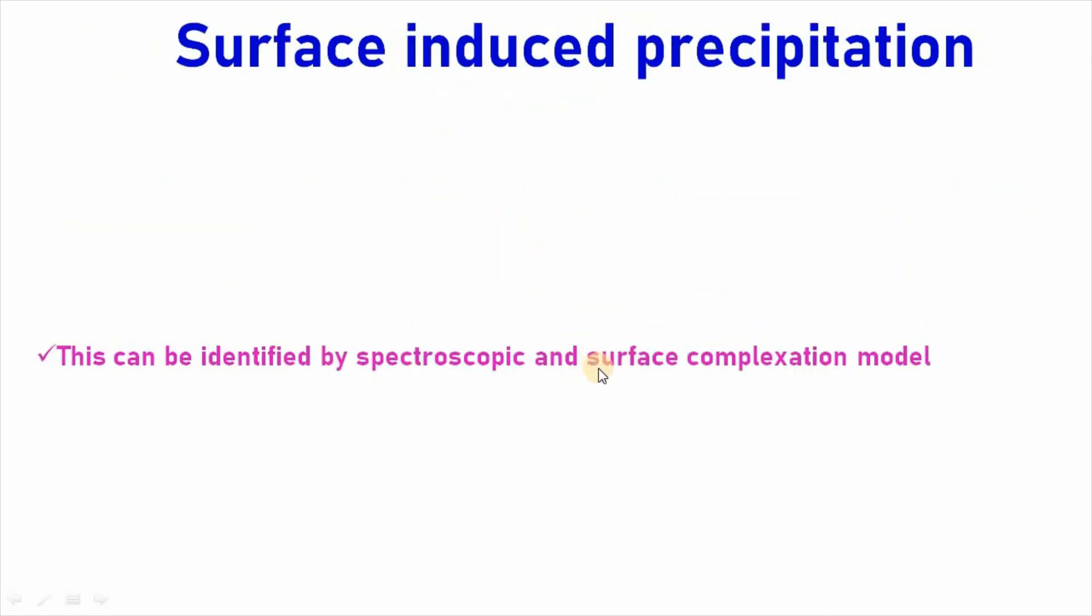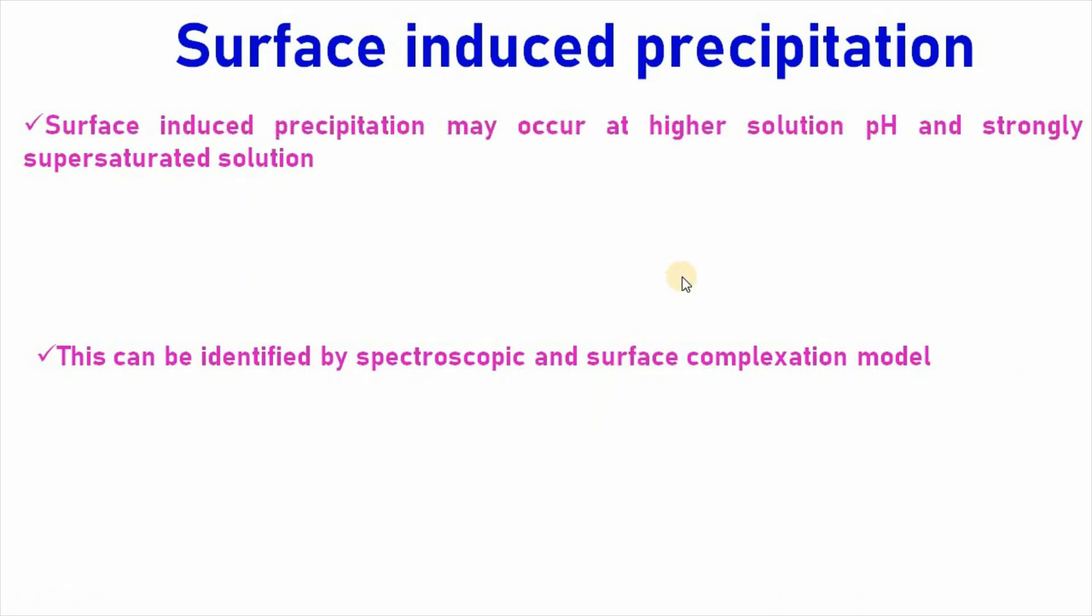Then comes surface induced precipitation. Surface induced precipitation may occur at higher solution pH and strongly supersaturated solution. And the formation of a precipitate can be caused by chemical reaction. And this can be identified by spectroscopic and surface complexation model.